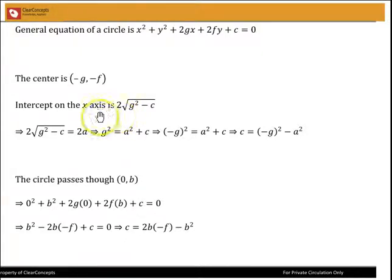We've been given that is equal to 2a, so equating that to 2a, we can square and get g squared is equal to a squared plus c, and remember that g squared is the same as minus g whole squared, so replacing that there, and then making c as the subject of the equation, we get c is equal to minus g whole squared minus a squared.